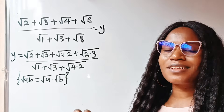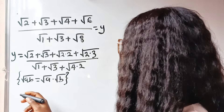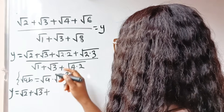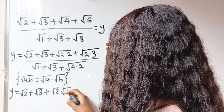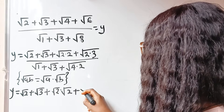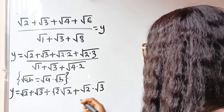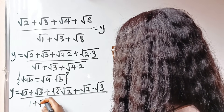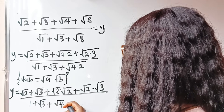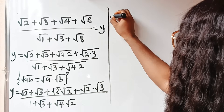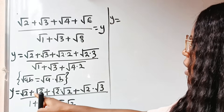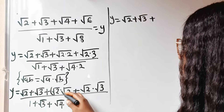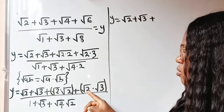Watch to the end and see the final amazing result. So now we have Y equal to square root of 2 plus square root of 2 plus square root of 3. This is the same as root 2 times root 2, plus root 2 times root 3, divided by root 1, which is 1, plus root 3 plus root 4 times root 2. Now this term and this term have root 2 in common, so let's factorize that.